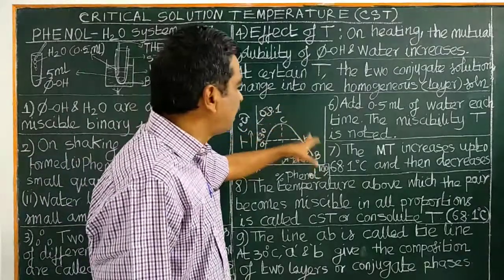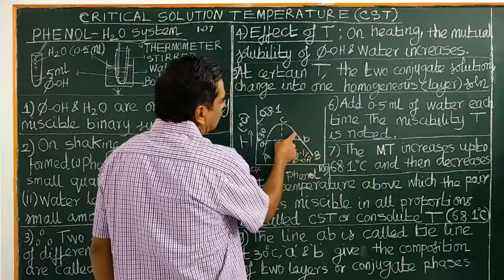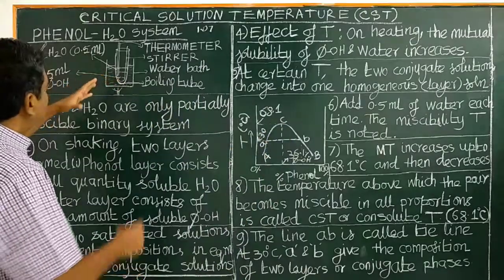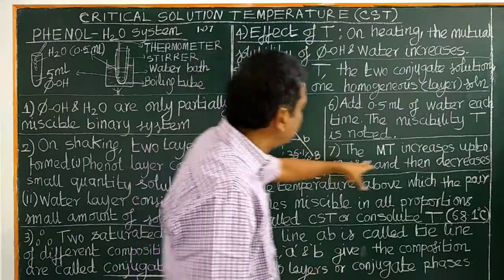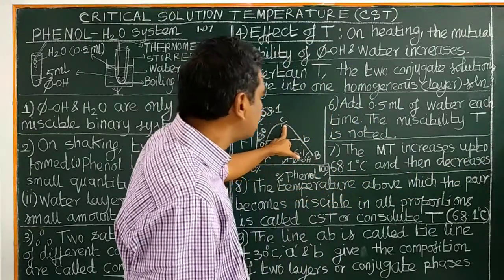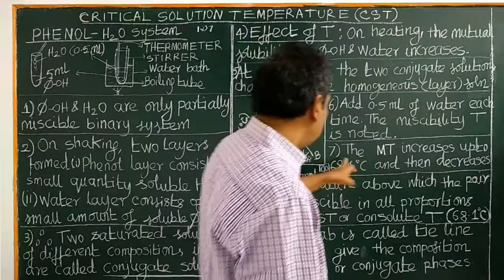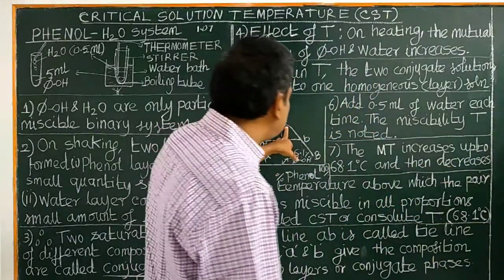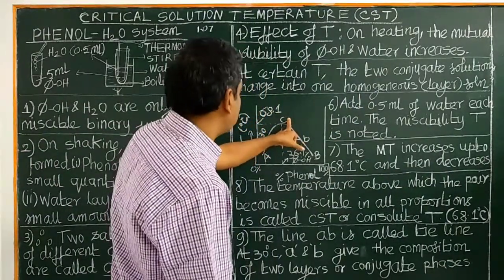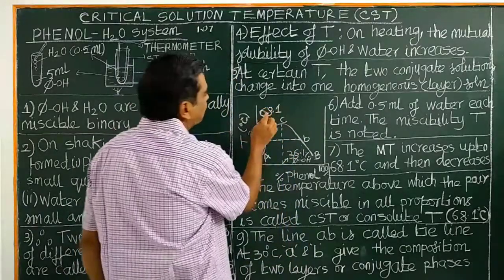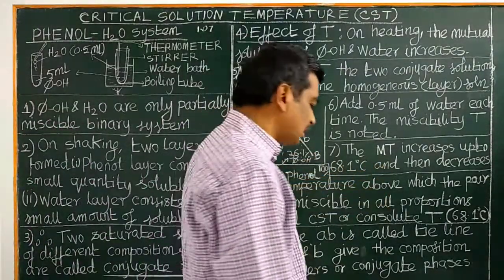The miscibility temperature increases up to 68.1 degrees Celsius and then decreases. This temperature, 68.1 degrees Celsius, is called the critical solution temperature for the phenol-water system.